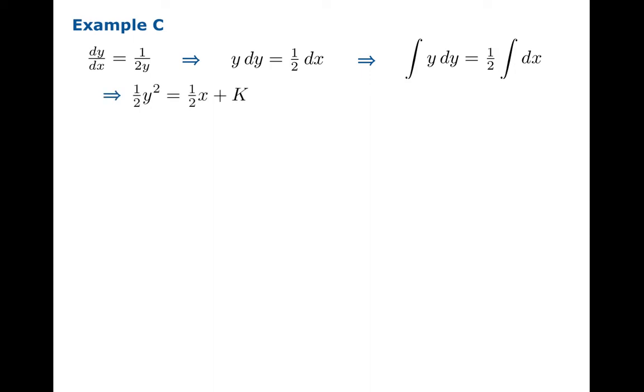Now in this case we're going to multiply both sides by 2. And now we've got a new constant, 2k. But once again we don't want to get too fancy with our constants. 2k is itself a constant. So at this point it might be wise to rename it just to keep life simple. And now we can take the square root. So y equals plus or minus square root of x plus c.